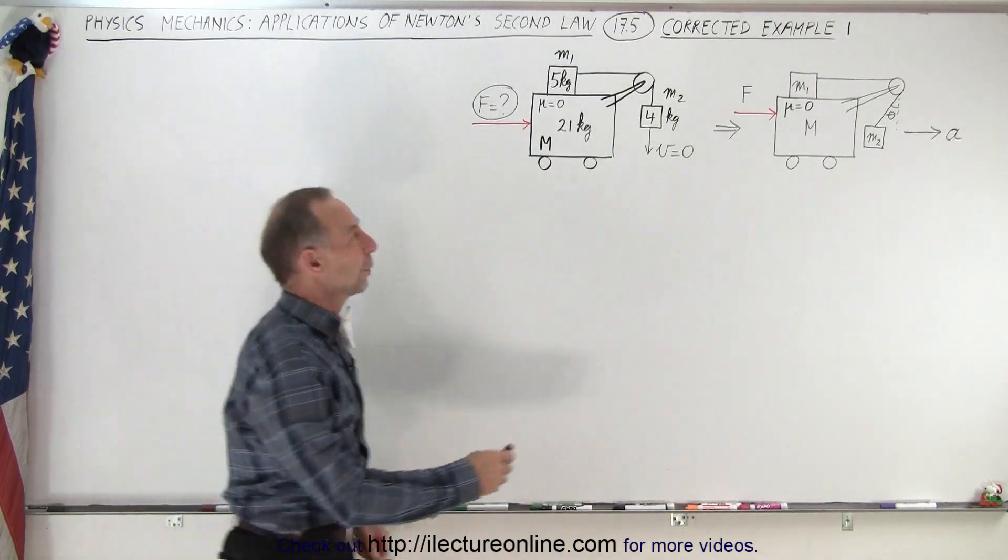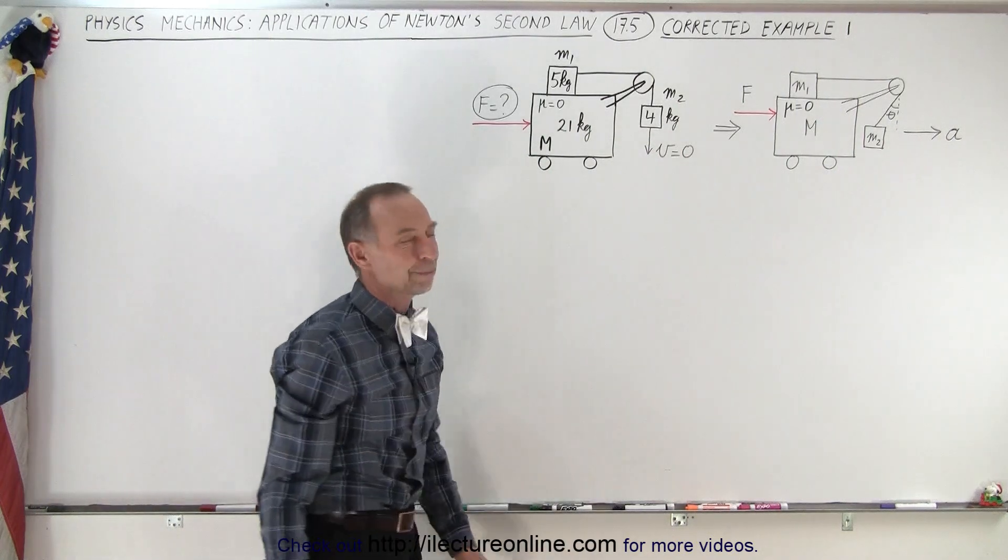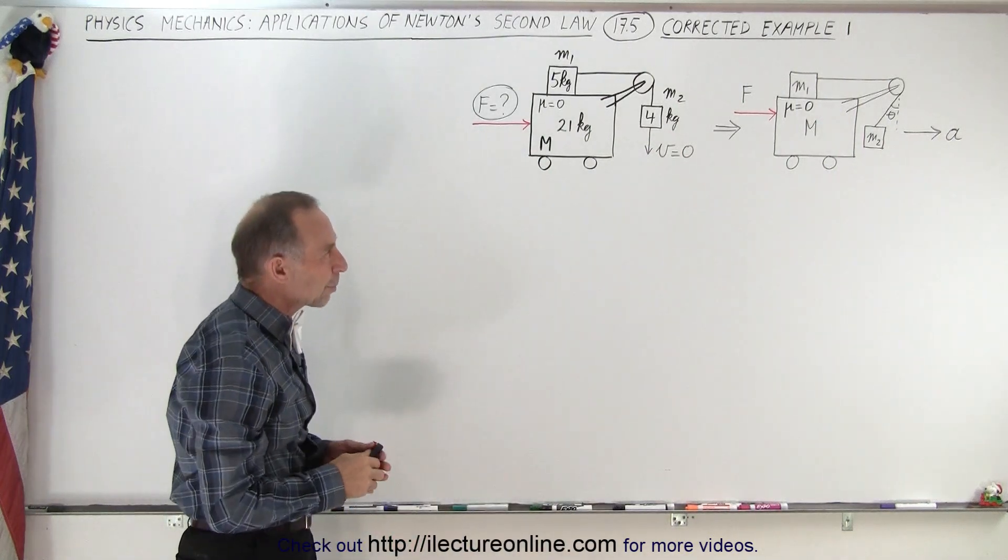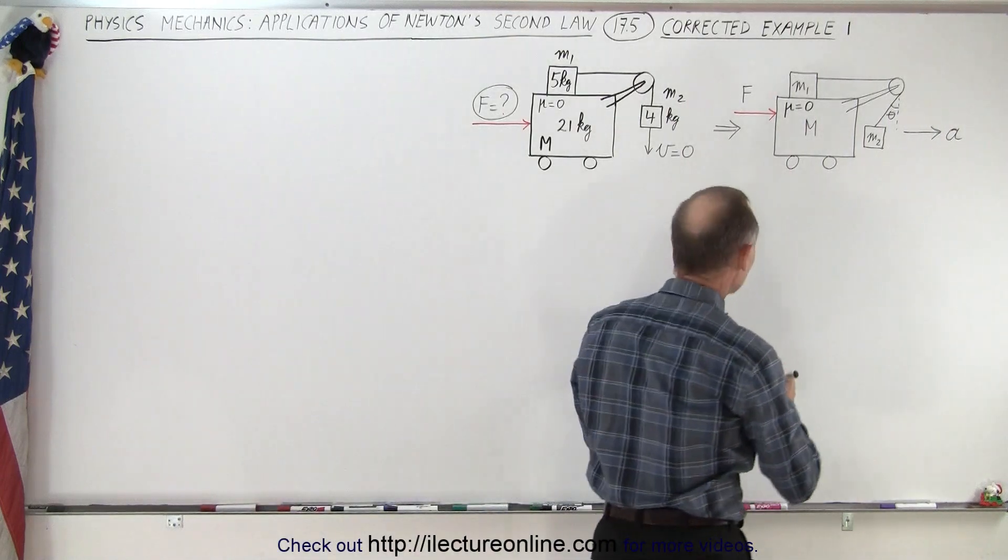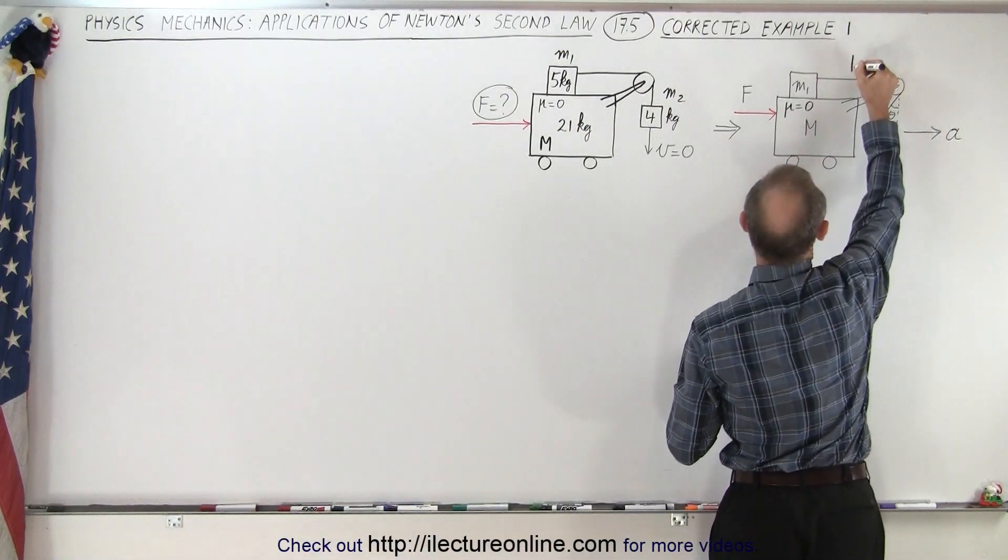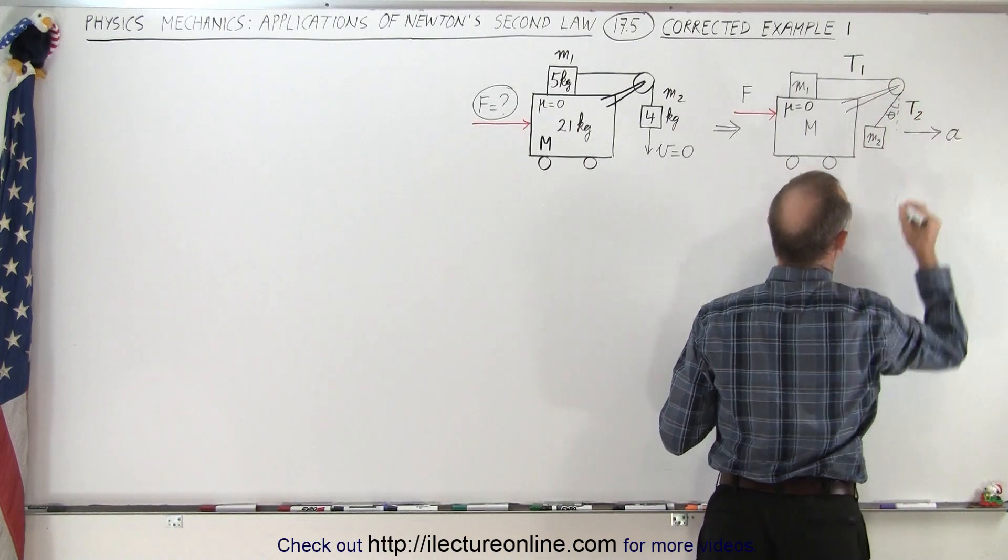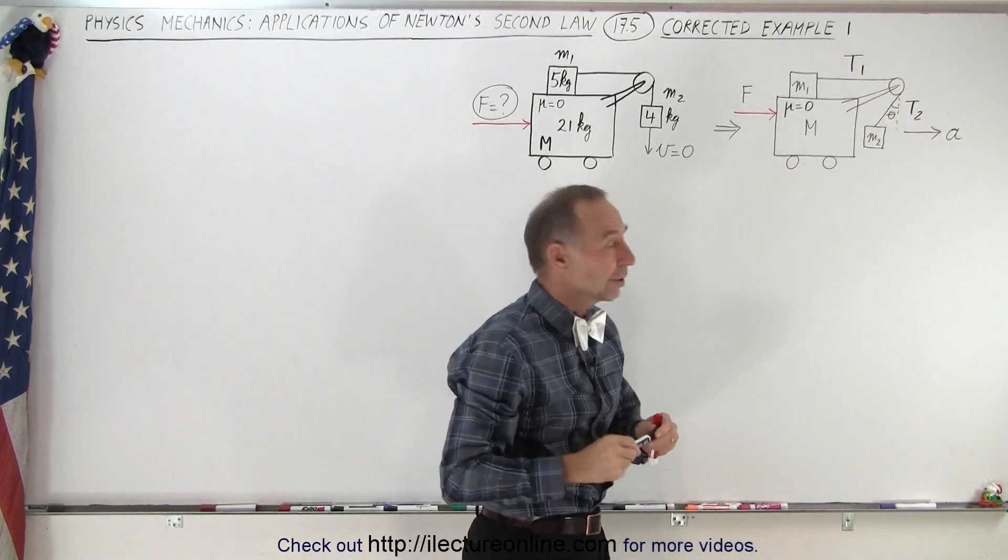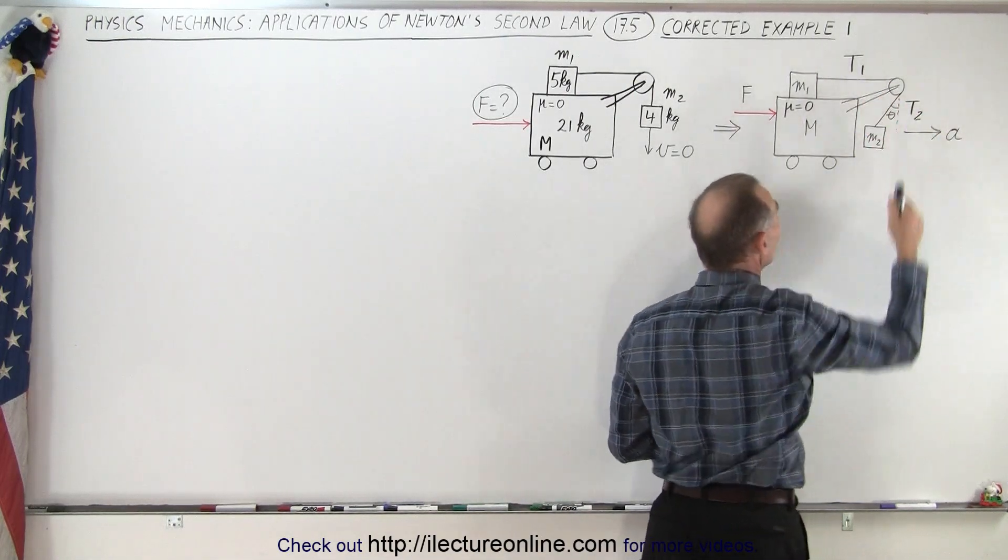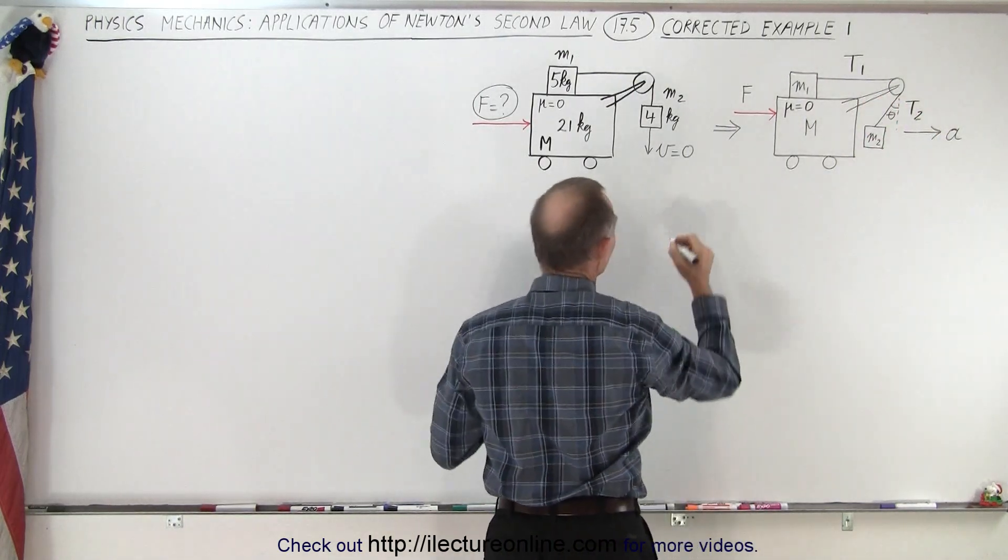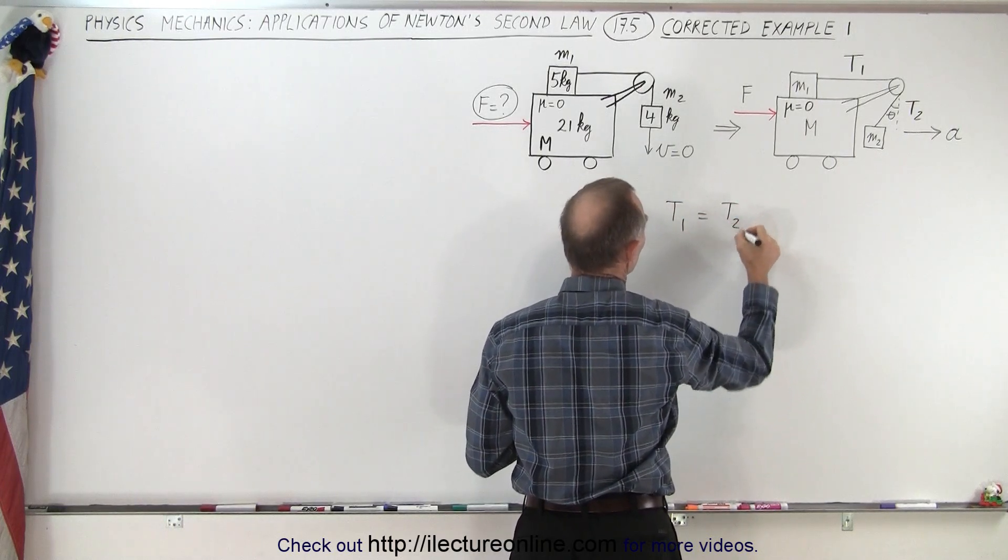So, what would be the acceleration necessary to do that, and what would then be the force required to do that? If we take a look at this problem, we begin to realize that there's a tension in the string here, let's call this tension 1, and there's a tension in the string here, let's call that tension 2. We've learned that if the pulley has no mass and has no friction, those two tensions must be the same. So tension 1 must equal tension 2.